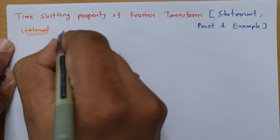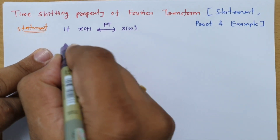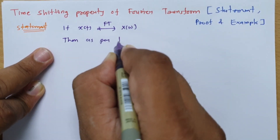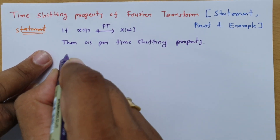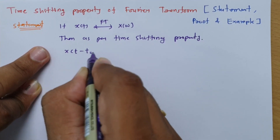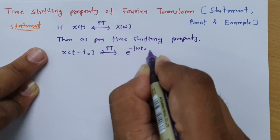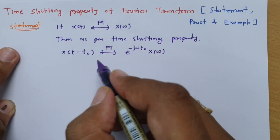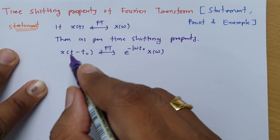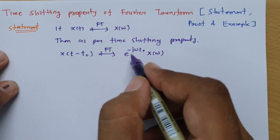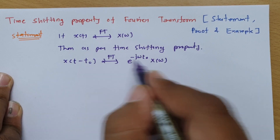Basically, if you have signal x(t) and it has Fourier transform X(ω), then as per the time shifting property, the shifted version x(t − t₀) has Fourier transform e^(−jωt₀) · X(ω). If you shift by −t₀, you multiply by e^(−jωt₀) · X(ω). If you shift by +t₀, giving x(t + t₀), the multiplication changes to e^(+jωt₀) · X(ω). That is the time shifting property.